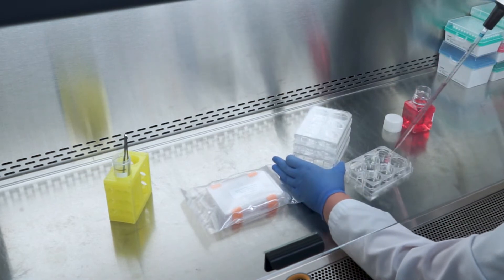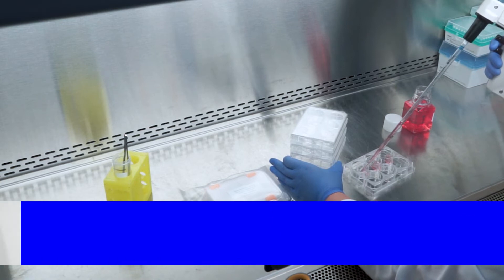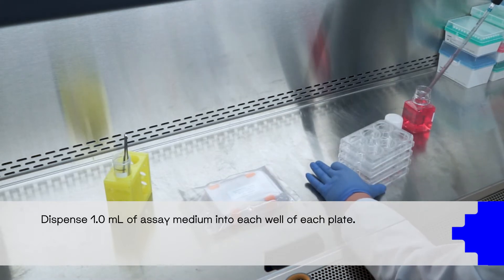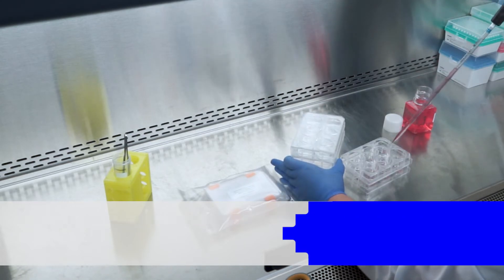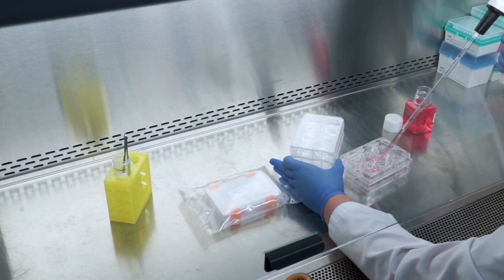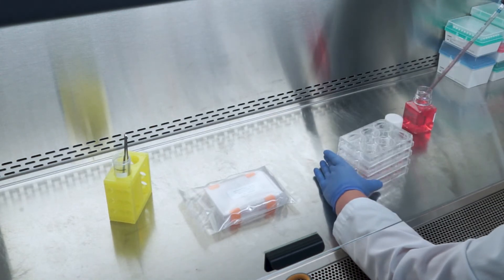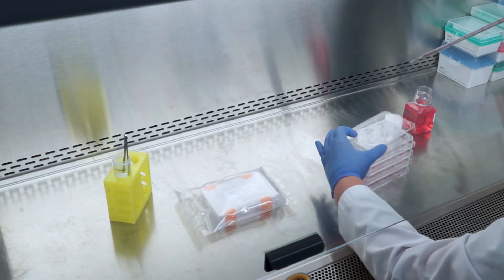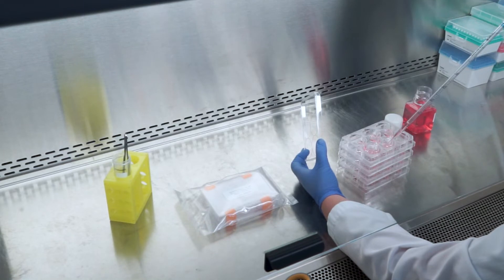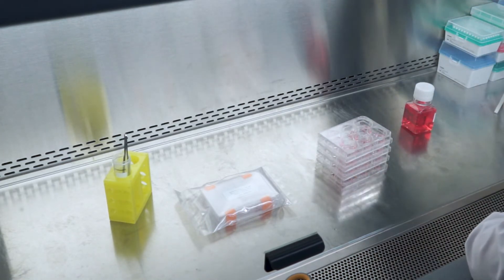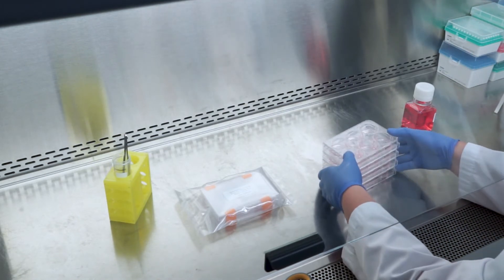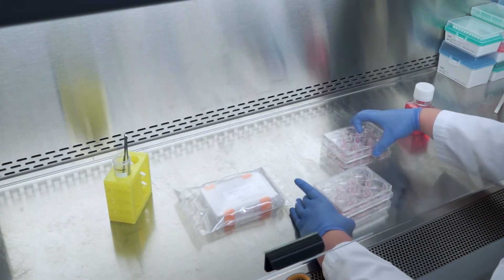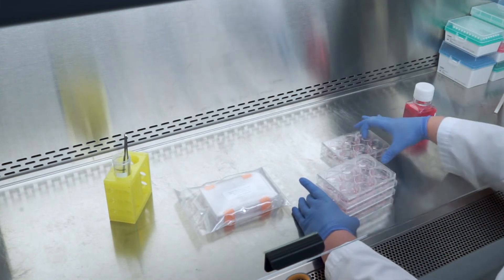Next, carefully remove the plastic seal from the assay medium bottle and using either a serological pipette or auto repeater, dispense one milliliter of assay medium into each well of each plate. Gently swirl each plate to ensure the surface of each well is covered evenly with the assay medium and place the plates aside.